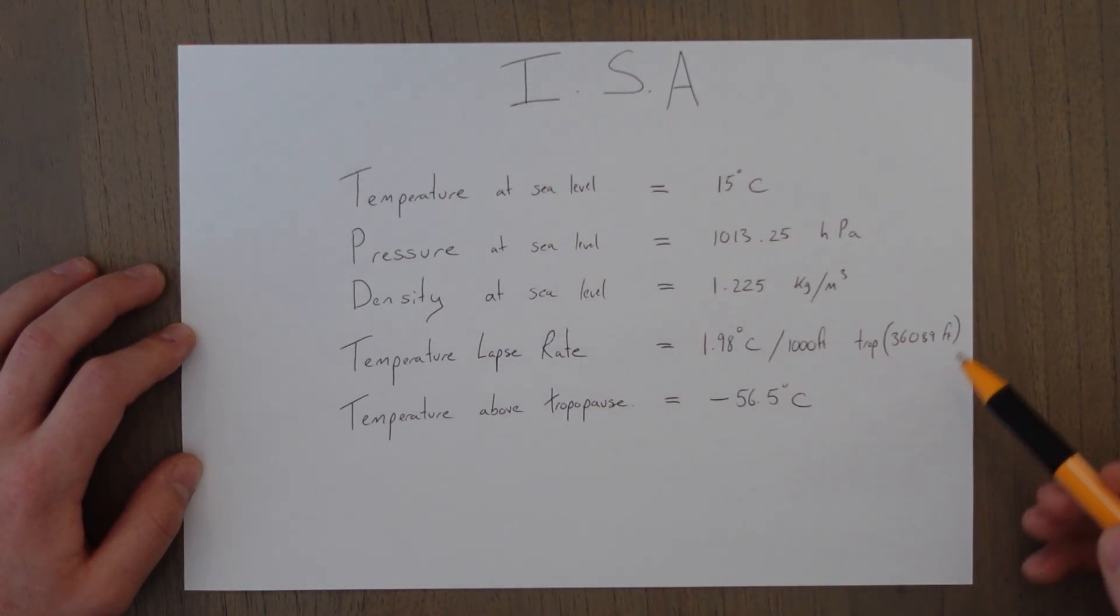So this is your international standard atmosphere. 15 degrees Celsius, 1013.25 hectopascals, 1.225 kilograms per meter cubed, 1.98 per 1000 feet lapse rate. The tropopause is at 36,089 feet and the temperature above is minus 56.5 degrees Celsius.